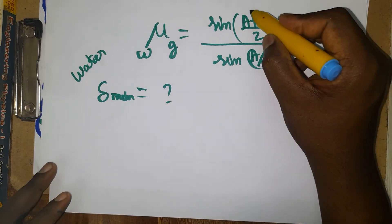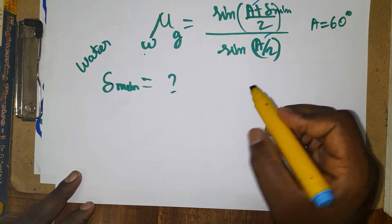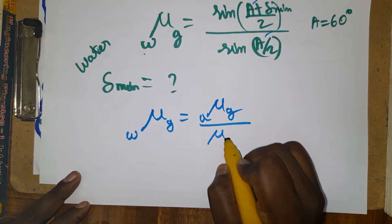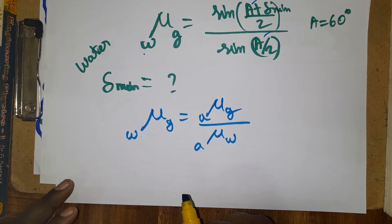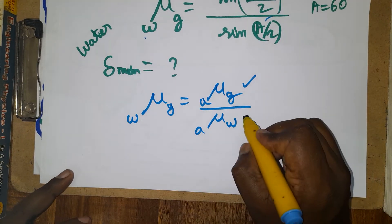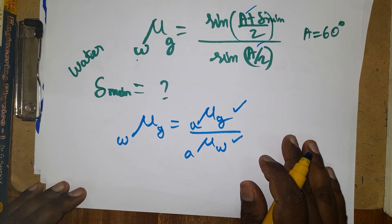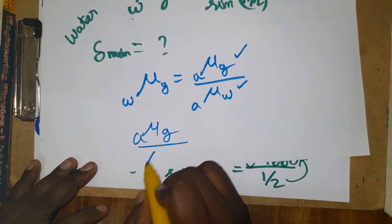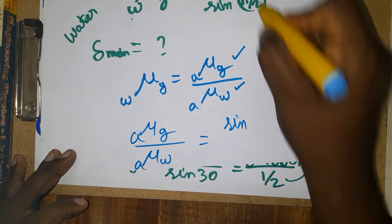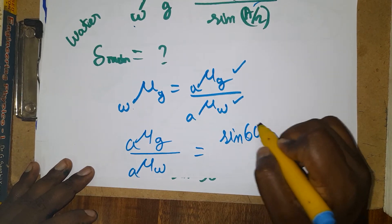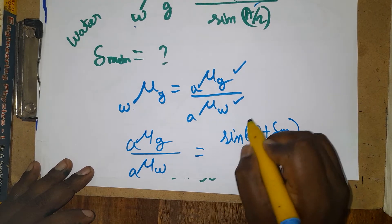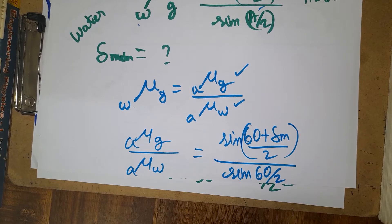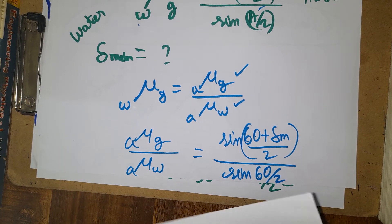The refractive index of water to glass equals refractive index of glass divided by refractive index of water. So we can write: μ(air to glass) / μ(air to water) = sin((60 + δ_min)/2) divided by sin(60/2). Since sin(30°) = 1/2, the denominator simplifies, and we substitute the known values.